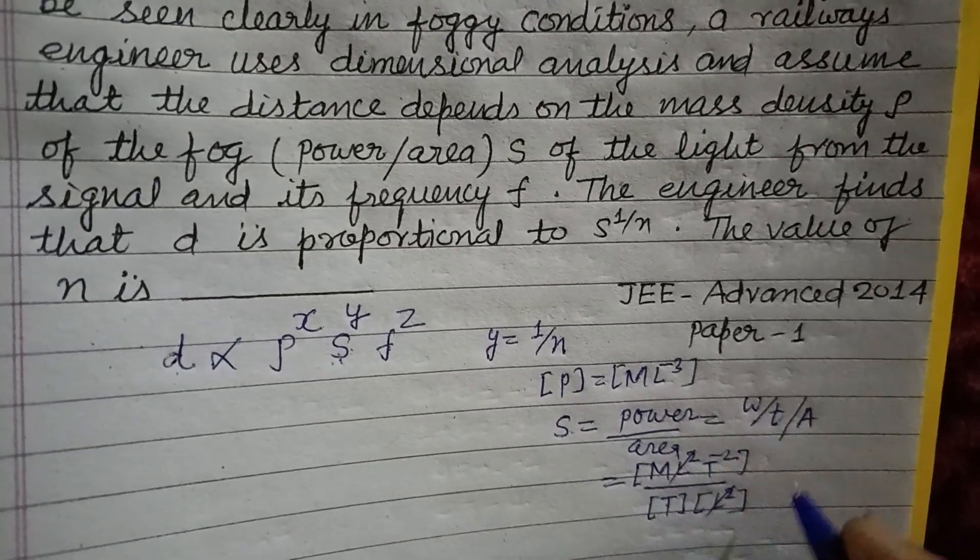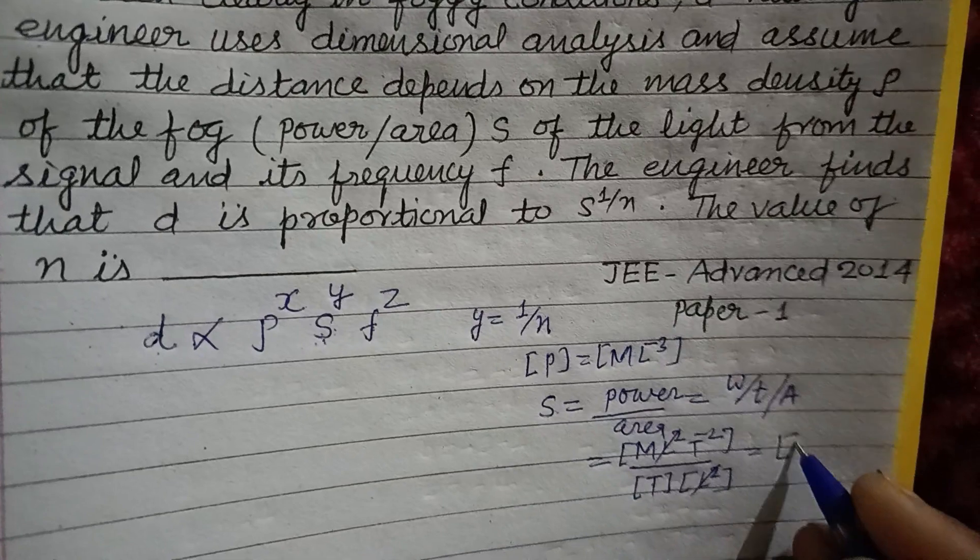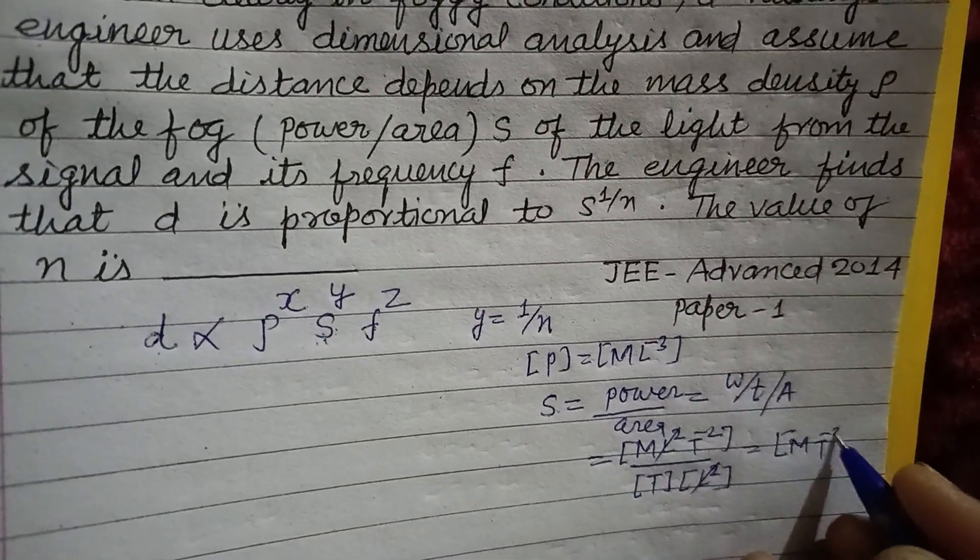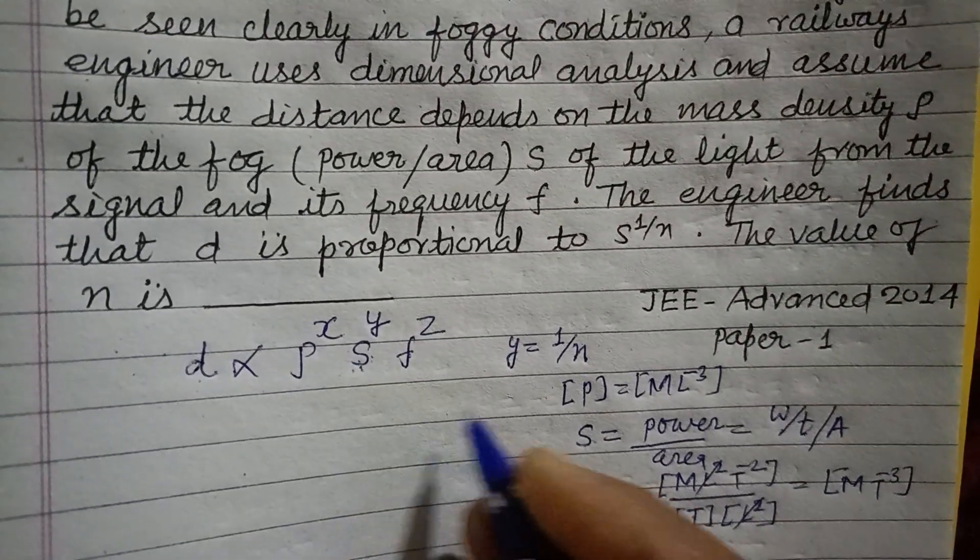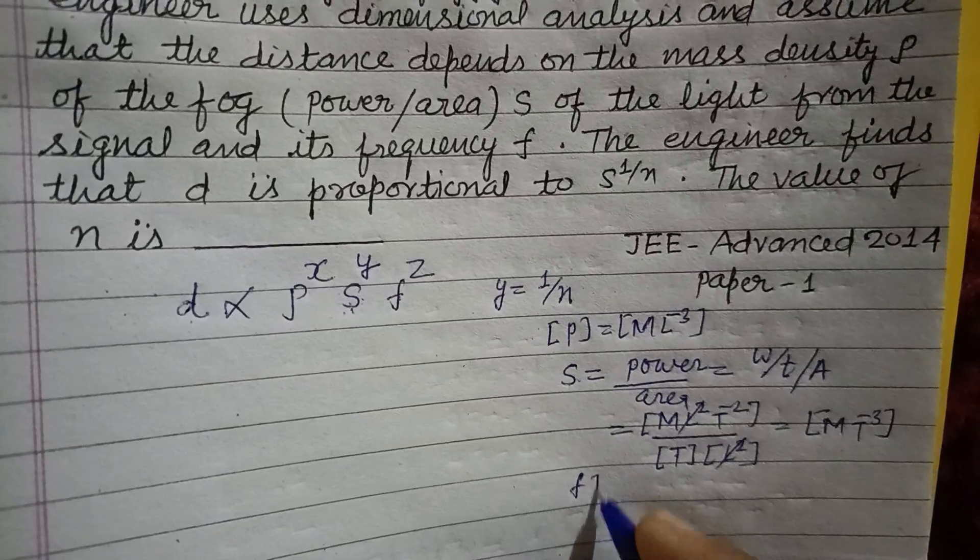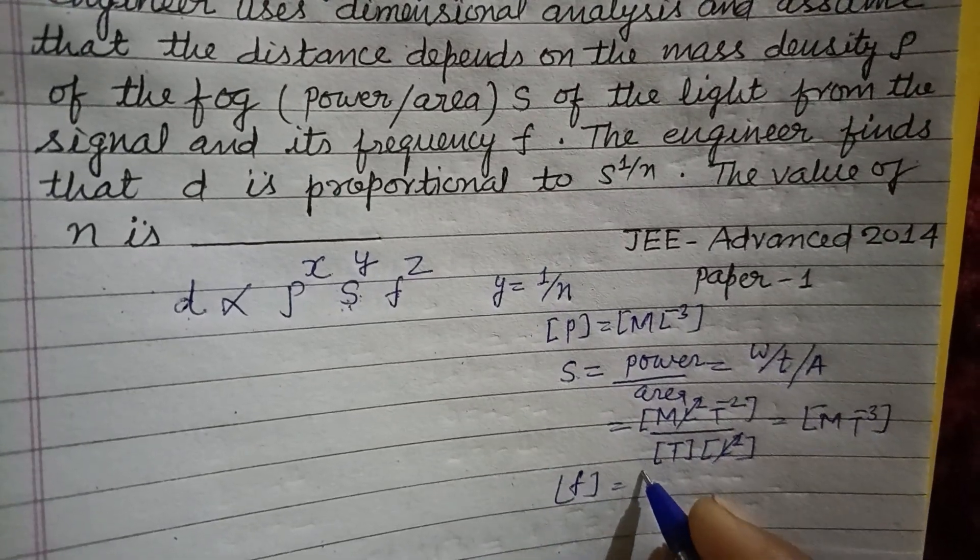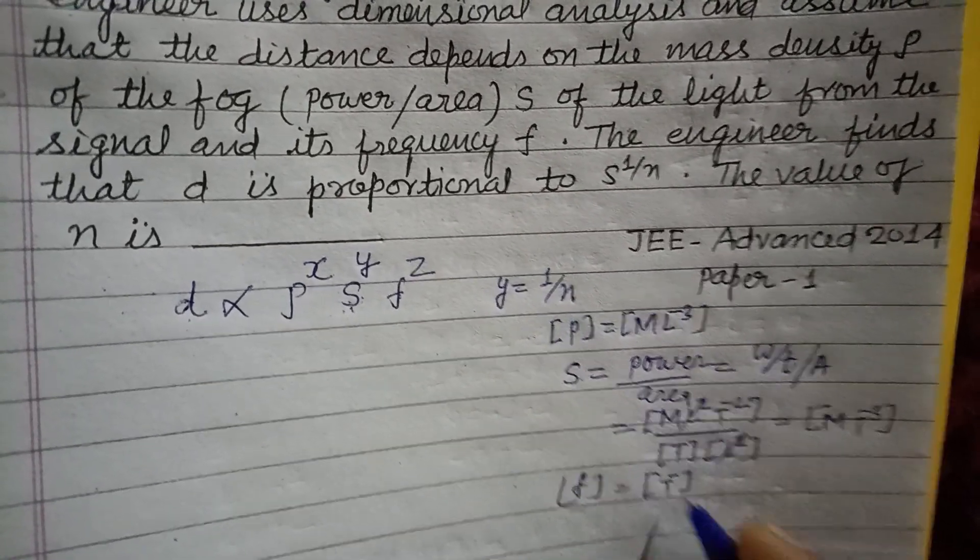So here L square as you cancel, we got dimension of s which is MT^-3. And dimension of frequency, you know that this is 1 upon t, which is T to the power minus 1.